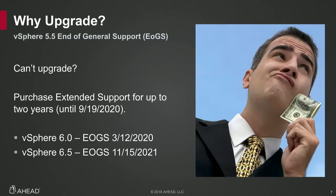vSphere 6.0 and 6.5 are both end of general support in the future. 6.0 ends in 2020, and 6.5 and 6.7 actually share the same date — November 15th, 2021. Extended support for vSphere 5.5 ends September 19th, 2020, and then you really have to move on to the next product level.